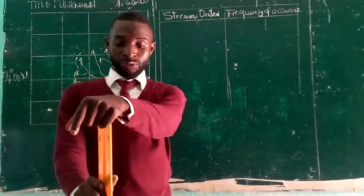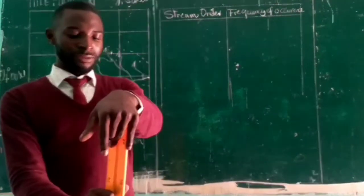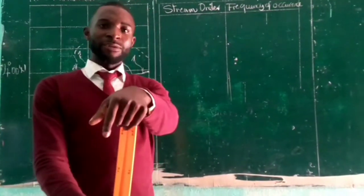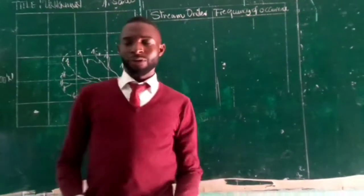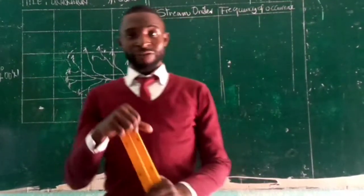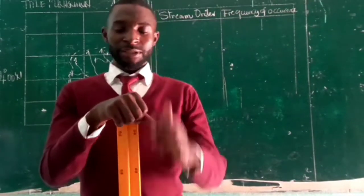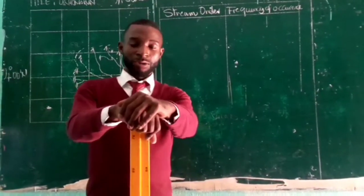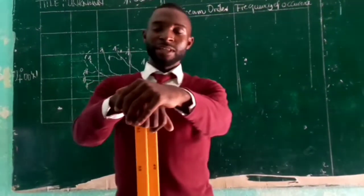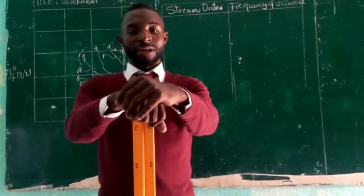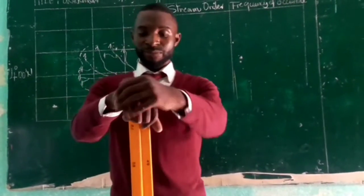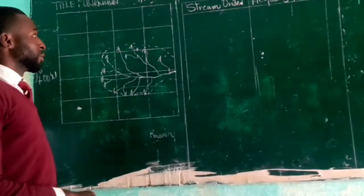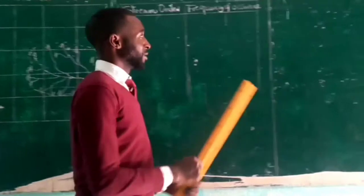Today we will continue with tutorials on map reading and we will be talking about the hydrological analysis of a map. Last time in the other video we talked about stream ranking and calculation of bifurcation ratio. This lesson today follows from stream ranking and the calculation of bifurcation ratio using the Strahler method, which is the best method to identify the propensity of a stream or river to flood an area. So today we shall be calculating the stream frequency.